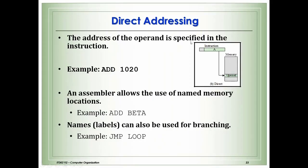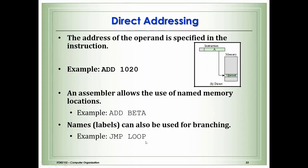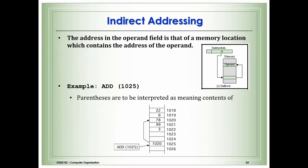Direct addressing: the address of the operand is specified in the instruction. The instruction contains the address that points to the operand — for example, 'Add 1020' adds whatever operand is stored at address 1020. This allows the use of named memory locations — for example, 'Add Beta' instead of a number. Labels can also be used for branching — for example, 'Jump Loop' — using a name instead of a numeric address.